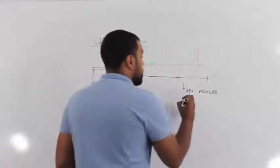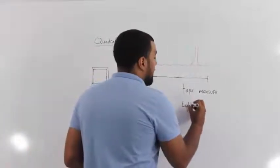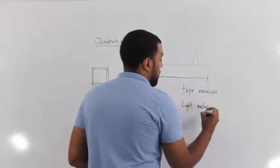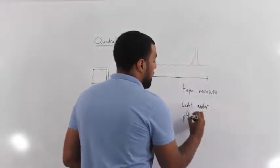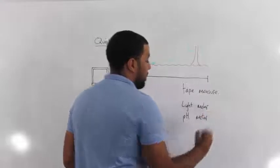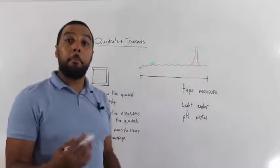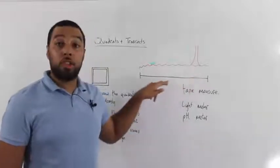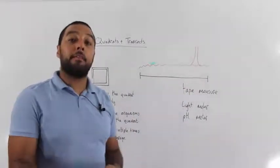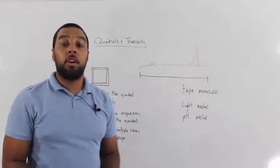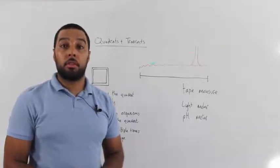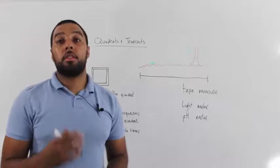We could also use a light meter or a pH meter, and we could use these two devices as we go along the transect to measure how the conditions change and to see if that affects the distribution of the different organisms. Okay guys, thanks for tuning in, stay in touch with another video.